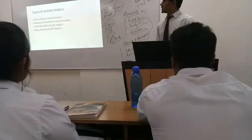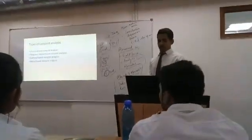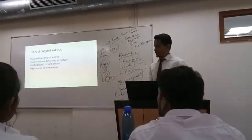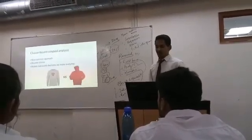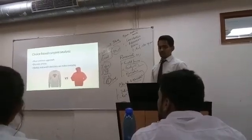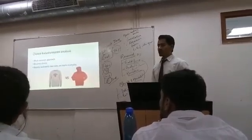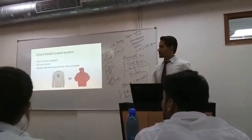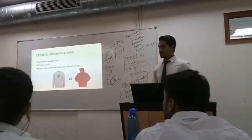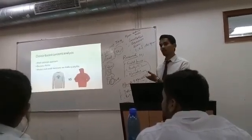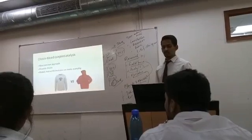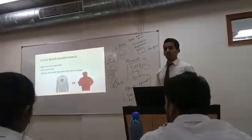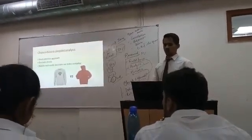Now, the types of conjoint analysis. There are several types: choice-based, adaptive, self-explicated, and menu-based. Choice-based is the most common type, as we use it in our daily life. For example, we choose which route to take to college, or whether we want a sweatshirt or a hooded sweatshirt. It involves discrete choices — we want this or that, we have many choices.